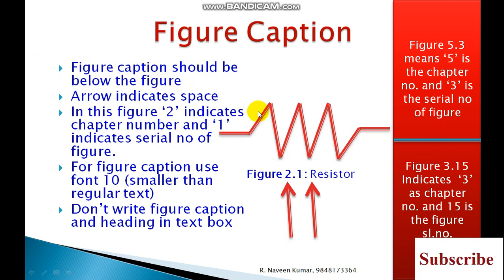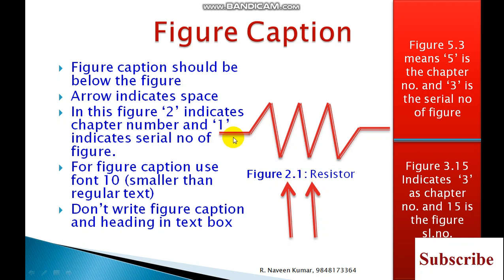The figure caption should be below the figure. For example, this is a resistor diagram — under that you should give the figure caption. If it is a table, above the table you give the caption. After the figure, give one spacing, then write '2.1' colon, then give spacing again, then write the figure caption. The arrow indicates the spacing.